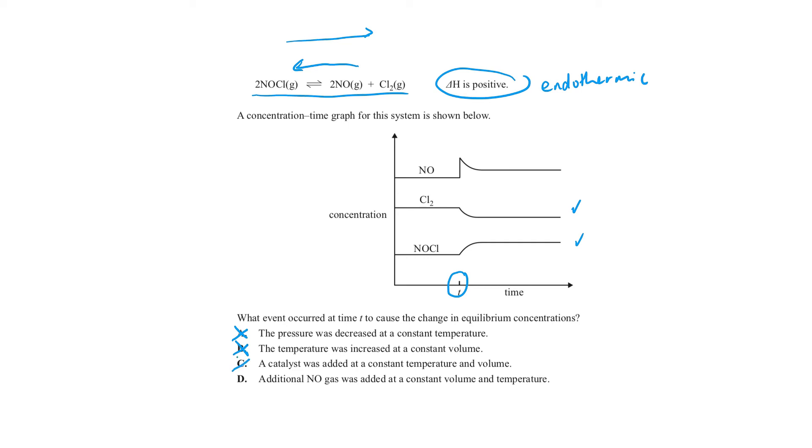That leaves us with the final answer of D. However, we will still check this. D says that additional nitric oxide gas was added at a constant volume and constant temperature. Now, this makes sense because our concentration of nitric oxide should rapidly increase.